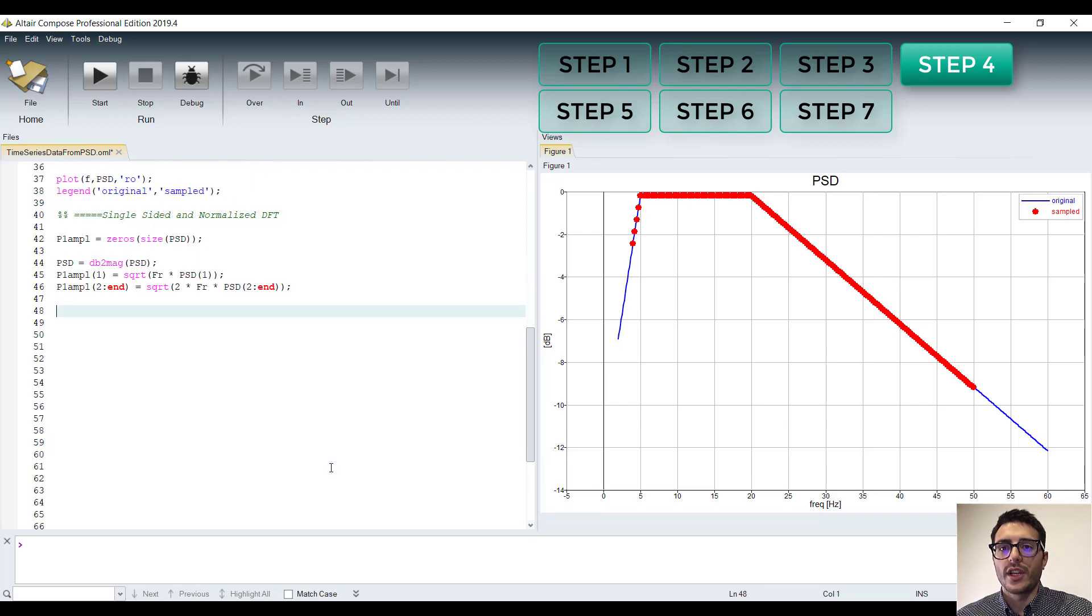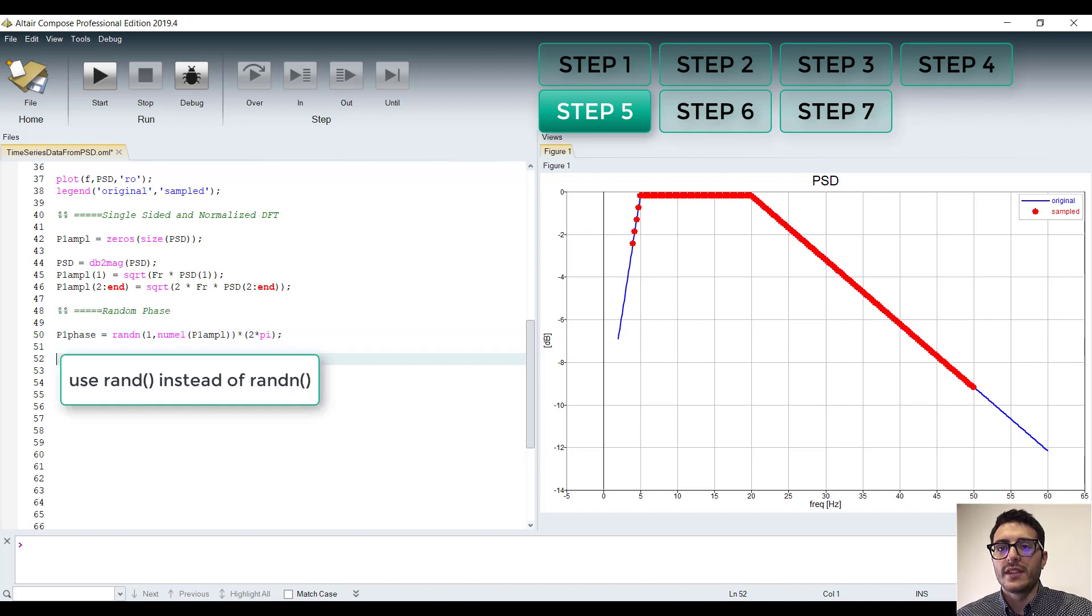Now we need to add the random phase. We can leverage the built-in random number generator. This function gives back a matrix whose size is specified by the first and second arguments, and whose values are a random number between 0 and 1. Hence, we multiply it by 2π to have a random phase between 0 and 2π.